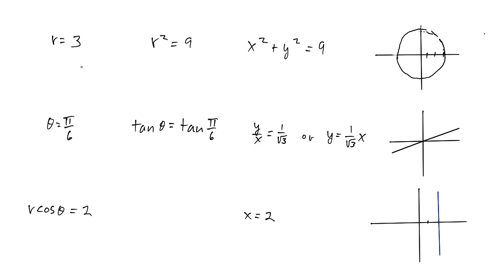So for instance, r equals 3. To convert this to rectangular coordinates, an equation using x's and y's, first square both sides. You get r squared equals 9, and then remember that r squared is x squared plus y squared, and that's still equal to 9. That's the equation of a circle with radius 3. That makes sense, r is 3, so the graph looks like a circle with radius 3.